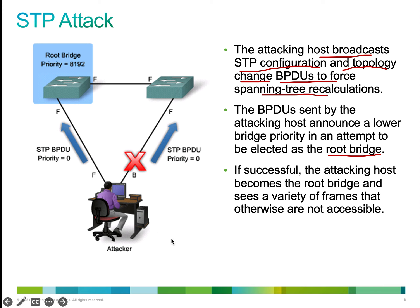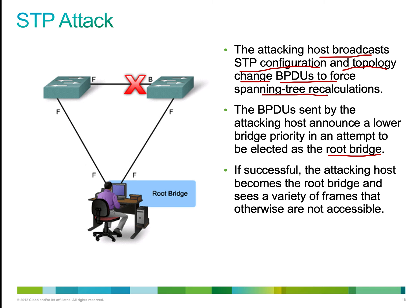If the attacker is successful, the attacking host becomes the root bridge and can see a variety of frames not otherwise accessible. Once he becomes the root bridge, the attacker can see frames and packets across all switch ports that were not available to him before. The mitigation method includes enabling PortFast, enabling root guard, and enabling BPDU guards — these three things will help prevent STP attacks.